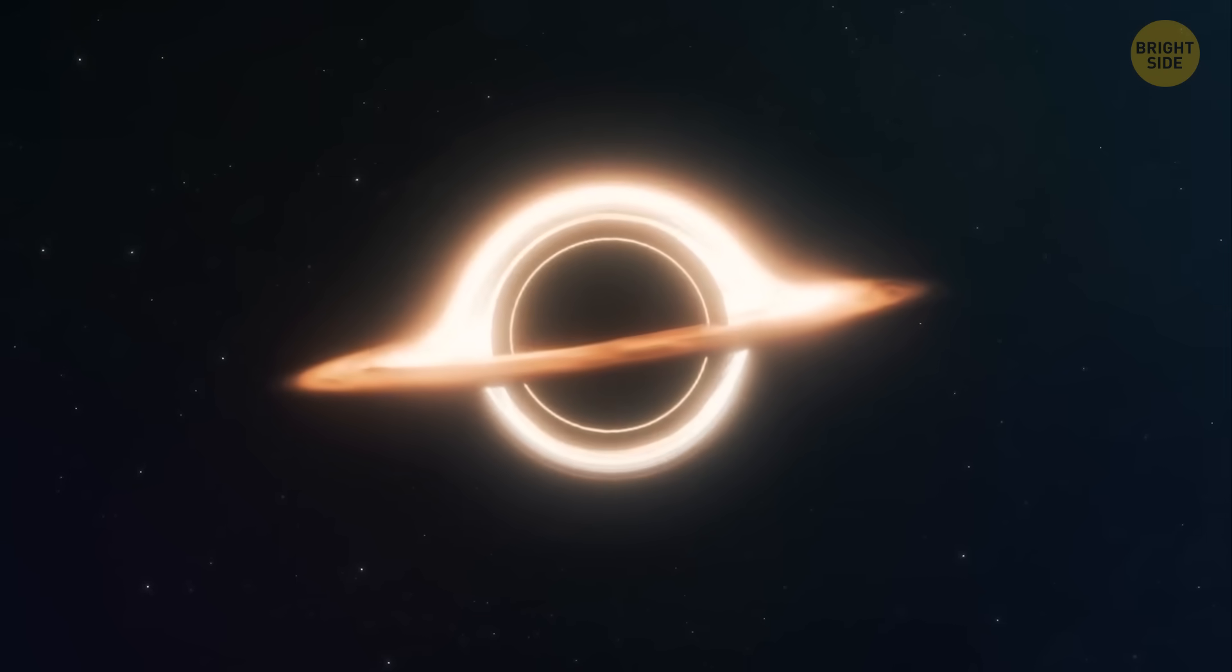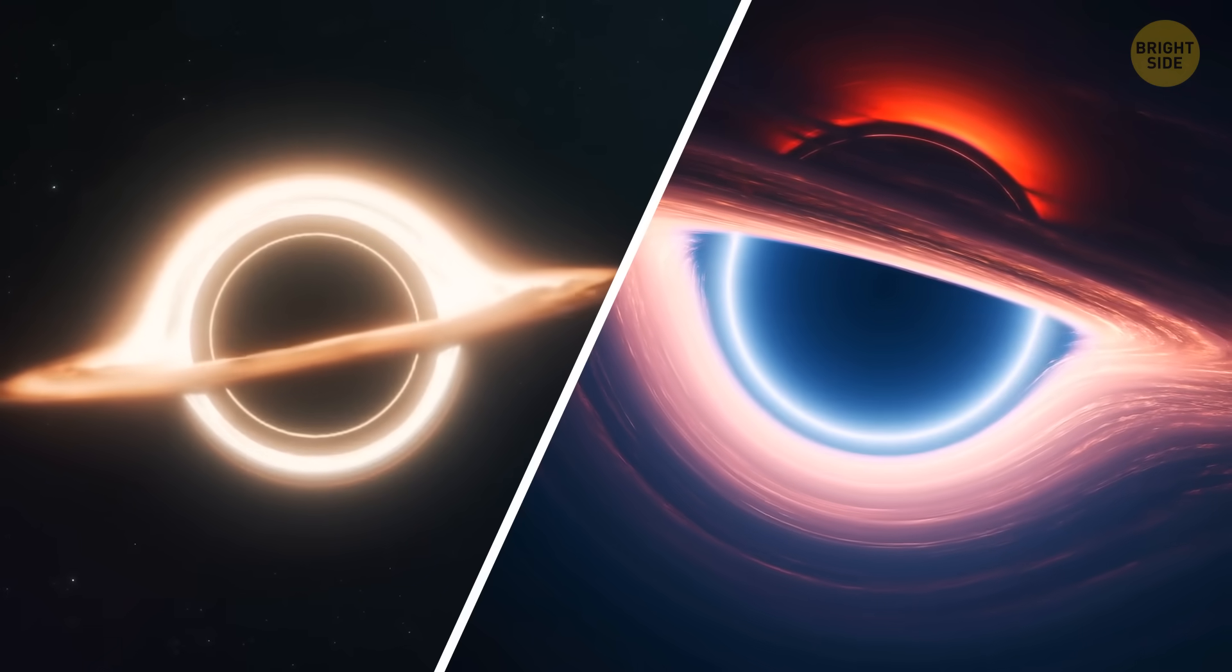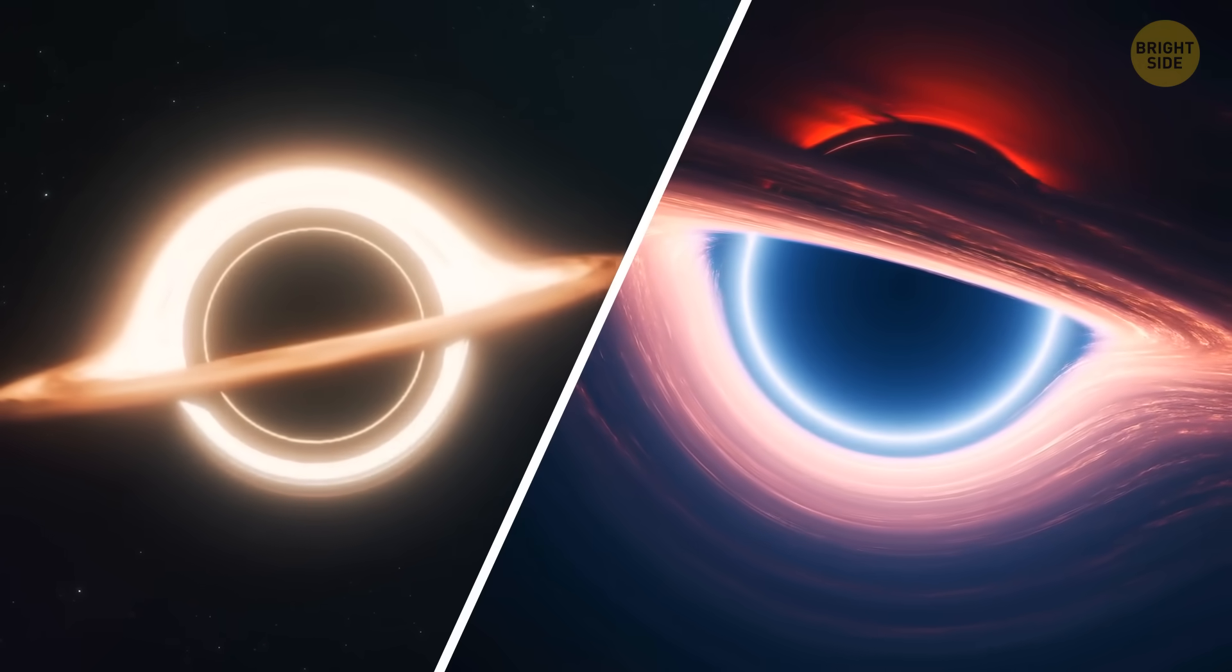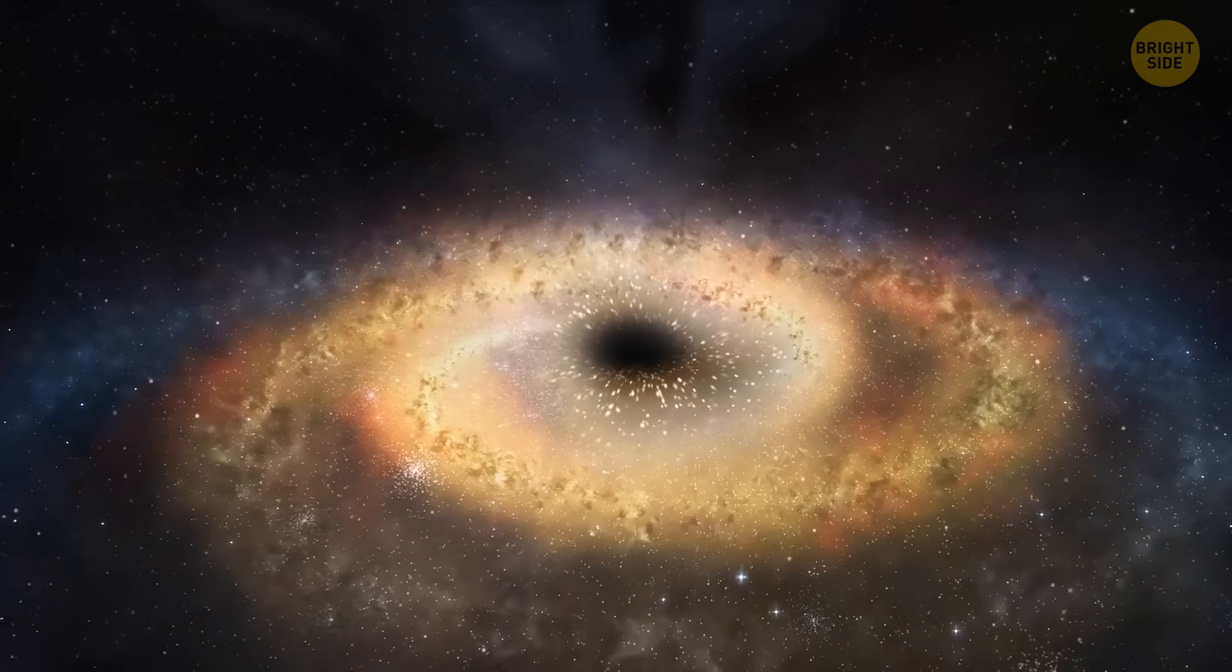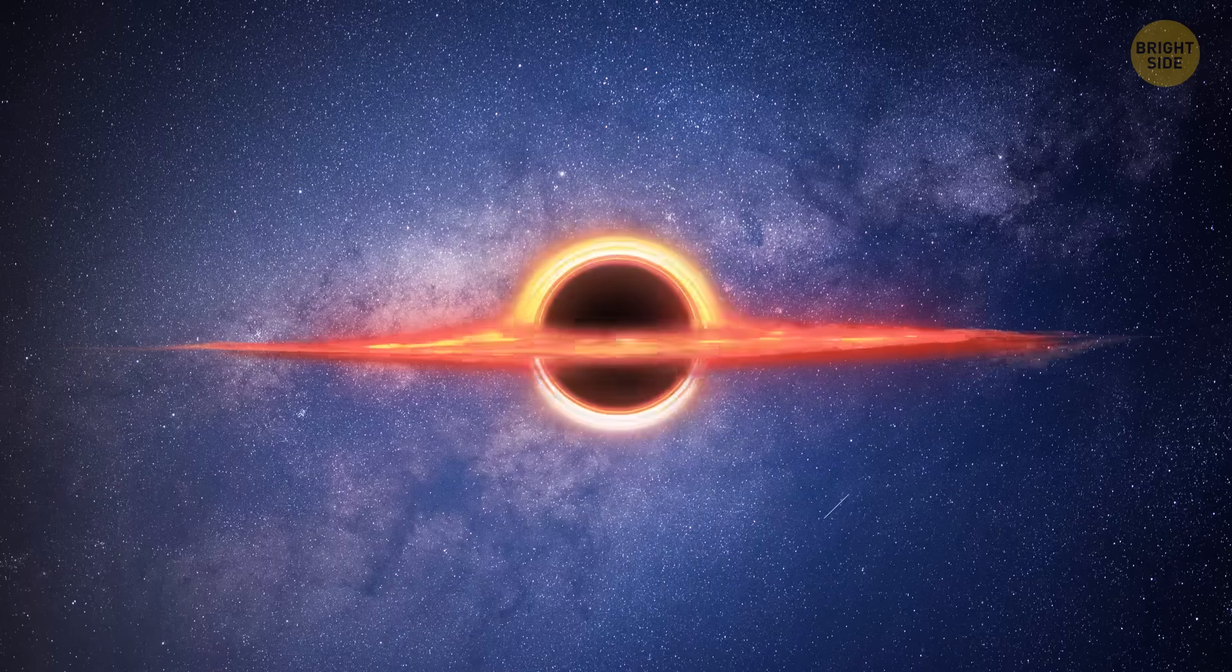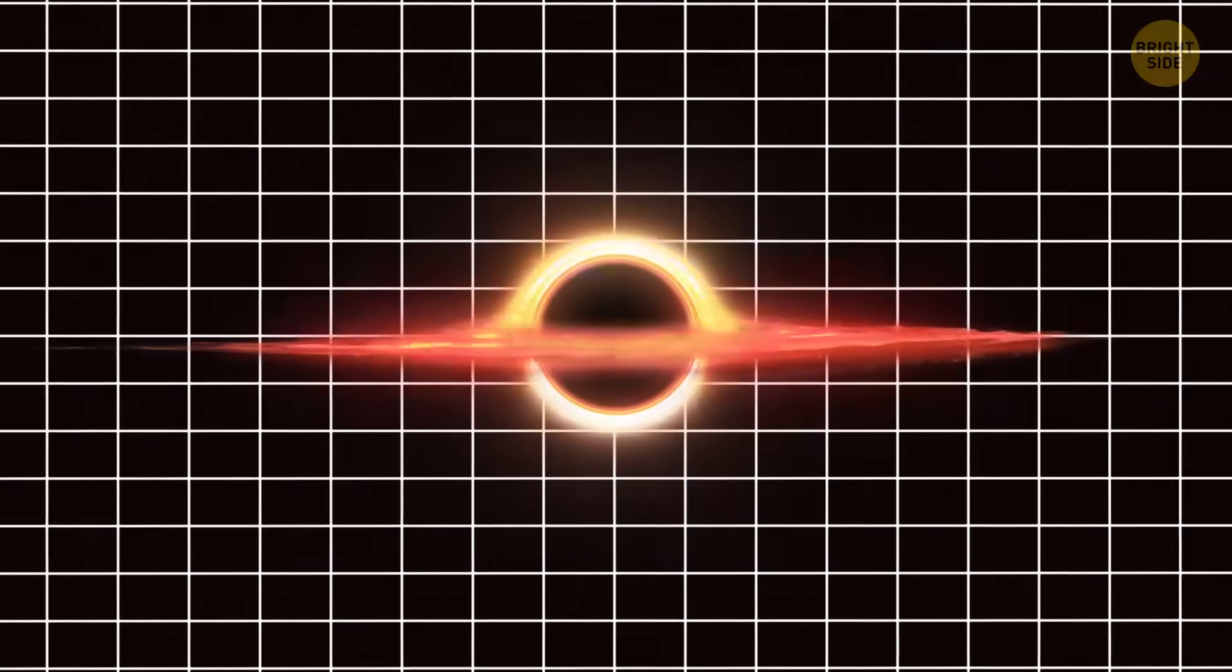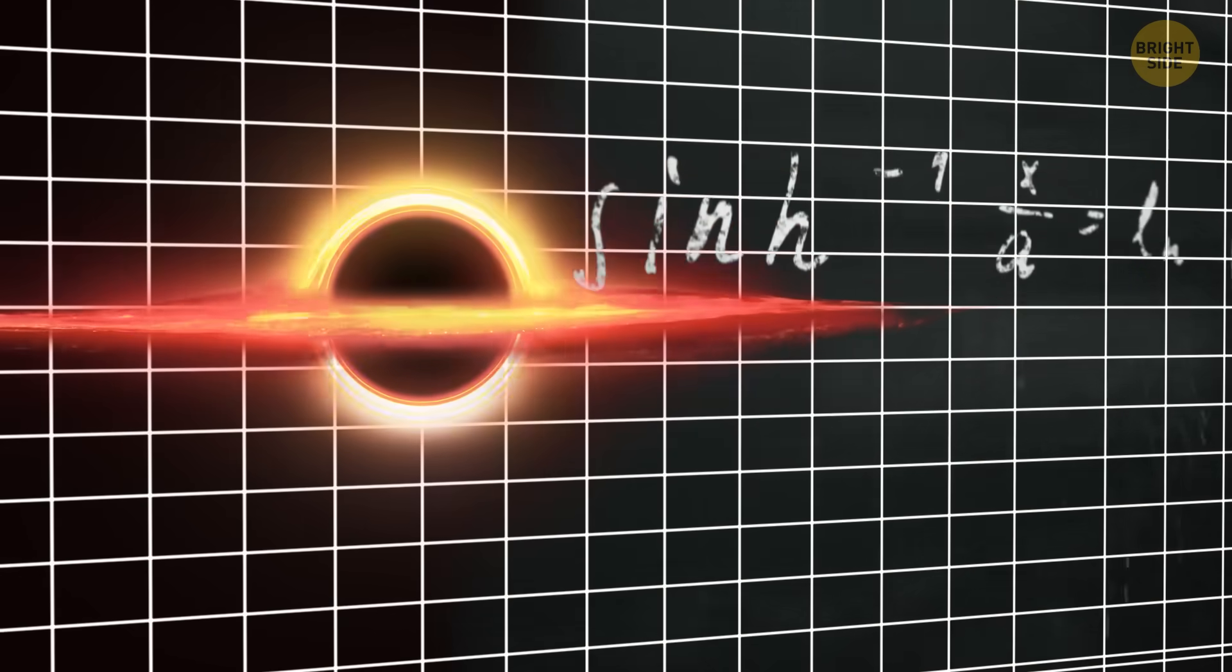It turns out that it's super hard to tell this difference. But maybe that's the point. Wormholes might be hiding in plain sight, wearing black hole costumes like it's Space Halloween. Wormholes could copy a black hole's behavior almost perfectly, at least on paper.